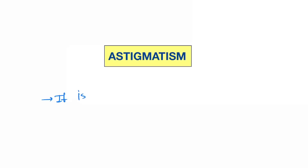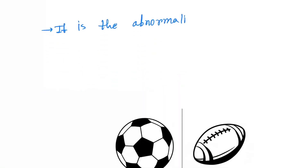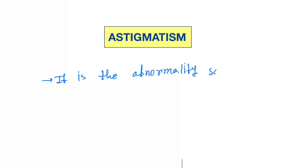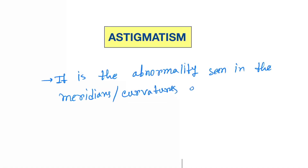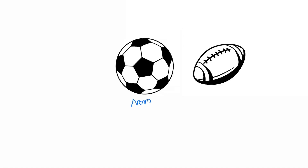Hello friends, today our topic is astigmatism. Astigmatism is an abnormality seen in the meridians or curvatures of the eye. We can compare a normal soccer ball to a normal eye, and a rugby ball to astigmatism.